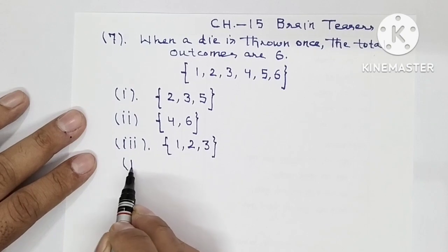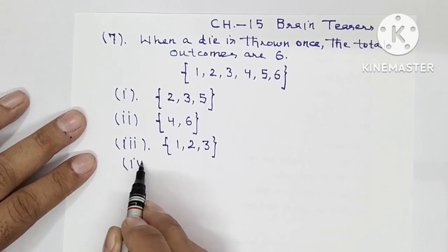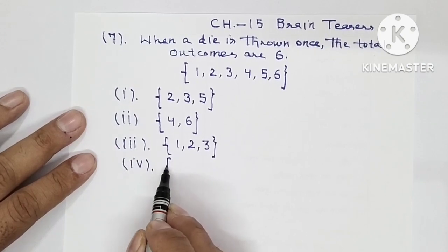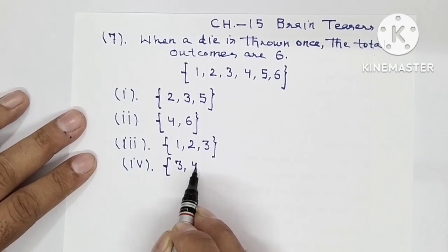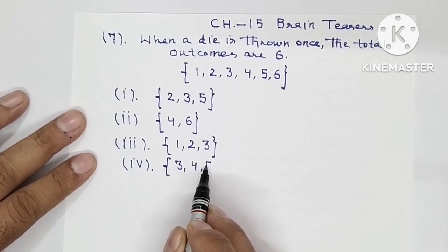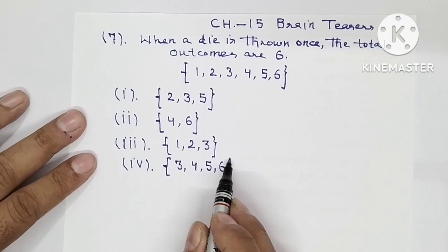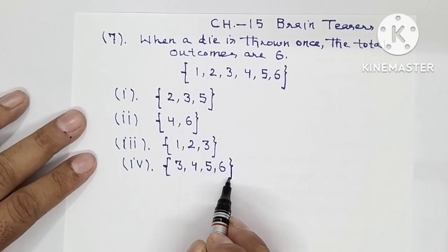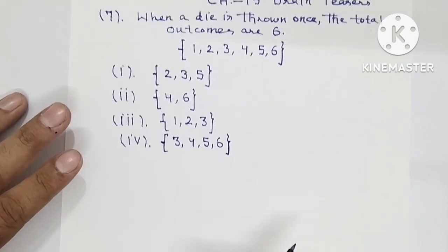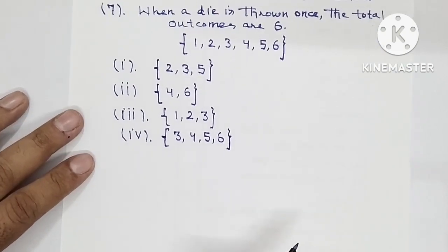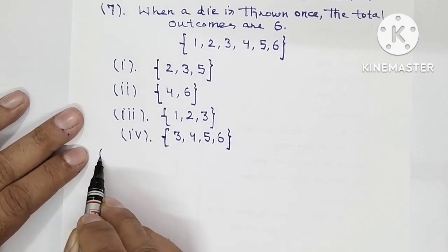Then part number 4 — a number more than or equal to 3. Since equal to 3 is also included, we take 3 as well. So the outcomes are 3, 4, 5, and 6. This is a number more than or equal to 3. So this was the solution of question number 7.